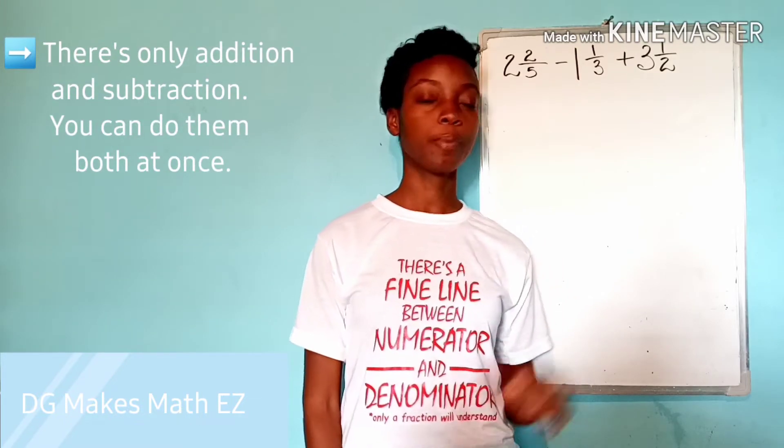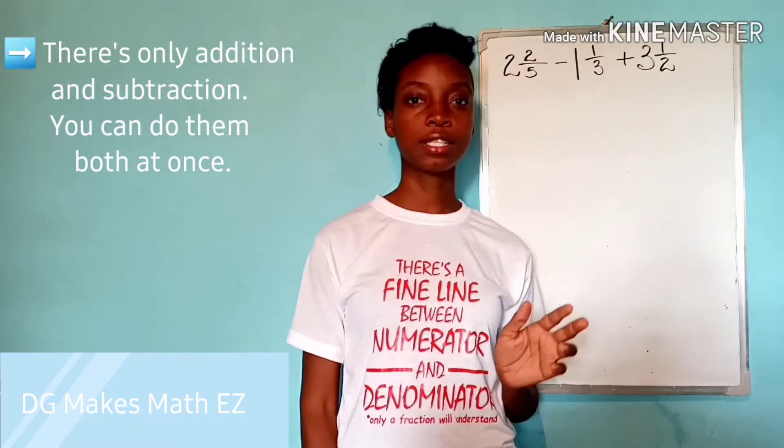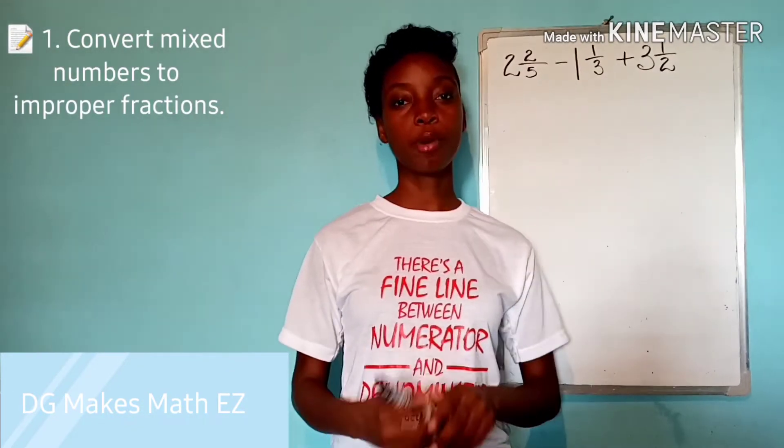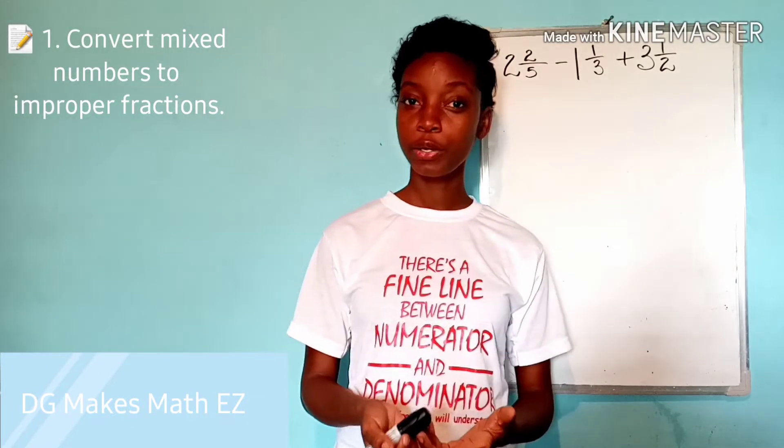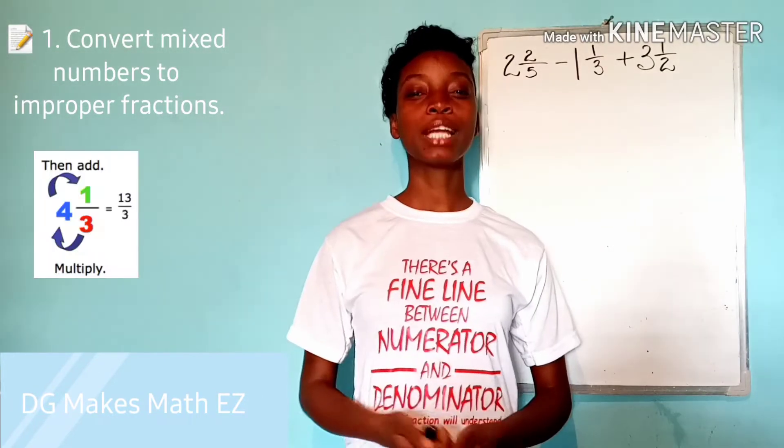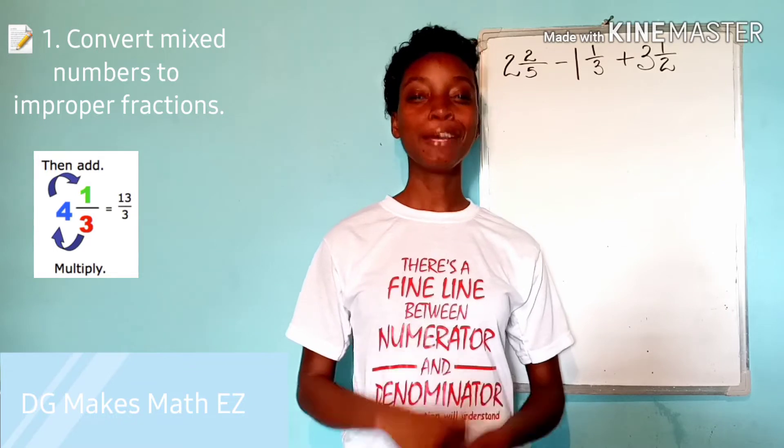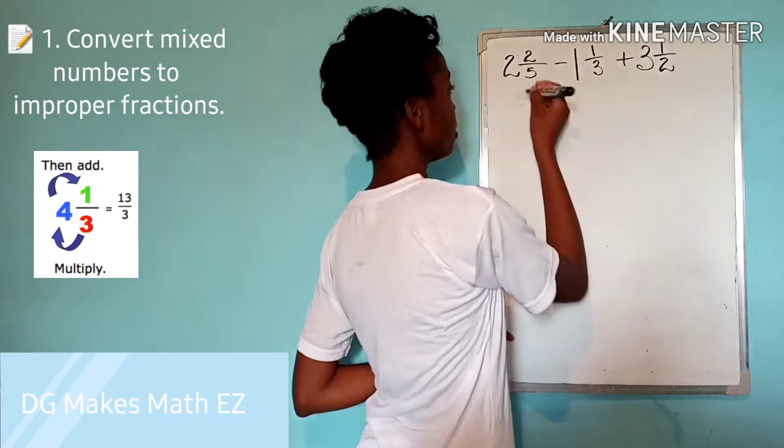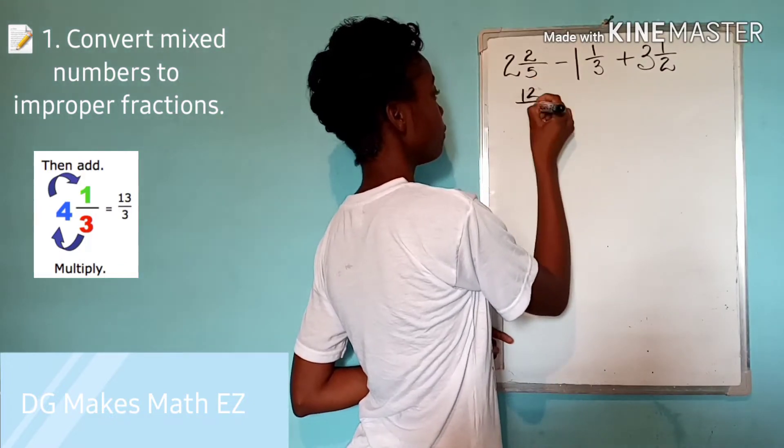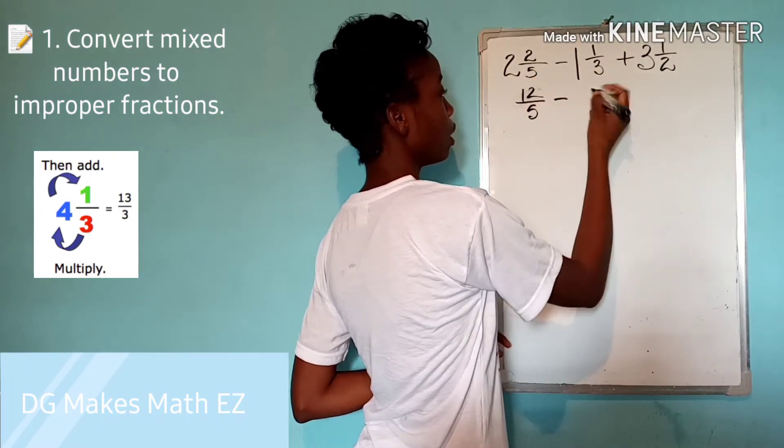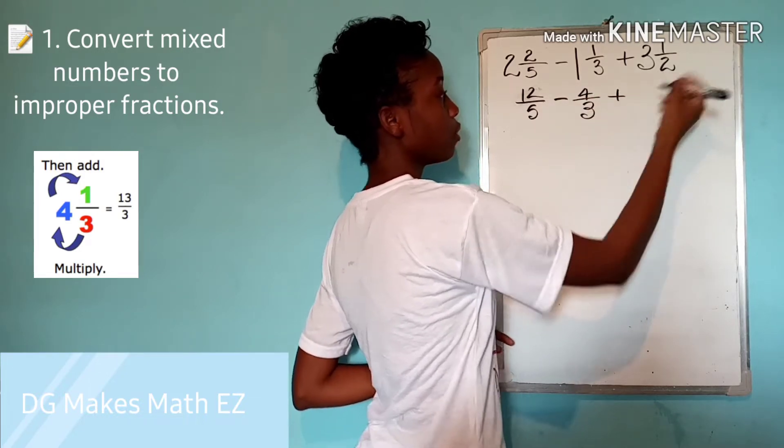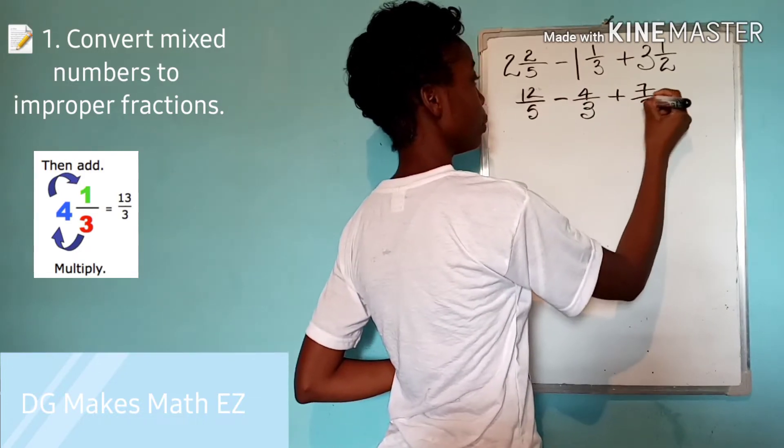One of the first things you want to do when you're presented with a fraction question like this is to change all mixed numbers to improper fractions and I hope you already know how to do that. If not I hope that the revision here on the left of your screen will help you out a bit. Two and two fifths can be rewritten as 12 over five, one and one third as four over three, three and a half, seven over two.